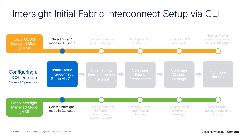The first step to configure a new UCS domain is to complete the initial fabric interconnect setup via the console. This is when we assign basic management network configuration for our fabric interconnects. As of firmware version 4.1(3b), you will be asked which mode you want the fabric interconnects to run in — you will enter UCSM mode for UMM or Intersight mode for IMM. The remainder of the setup is fairly similar no matter which option you choose; just follow the on-screen instructions to complete the setup.